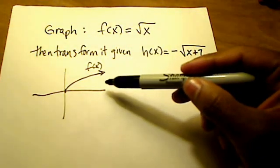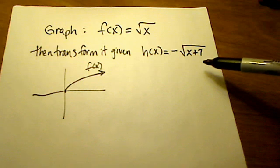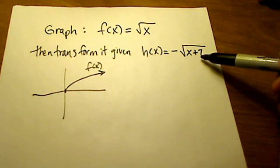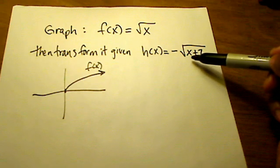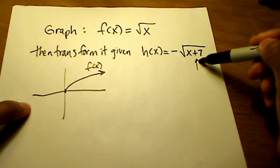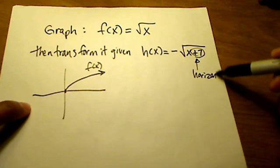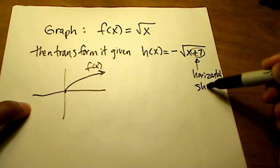Based off of that, let's see if we can go and graph this transformation. A couple of things going on here. One is that plus 7 that's inside of the square root that is directly affecting the x is a horizontal shift. So this thing here is going to give me a horizontal shift.